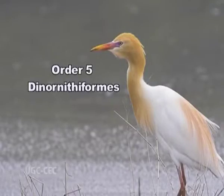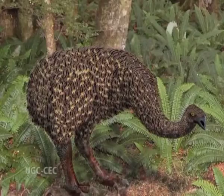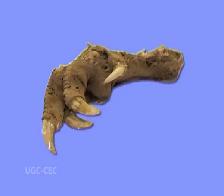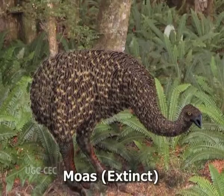Order 5, Dinornithiformes. Giant flightless terrestrial birds that became extinct nearly 700 years ago. Feathers with large aftershaft. Wings are almost absent and beaks are very short. Legs were massive bearing four toes. Sternum reduced and without keel. Pectoral girdle is completely absent. Example: moa, which is now extinct.